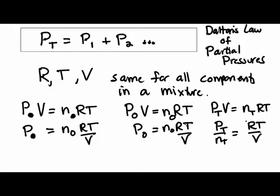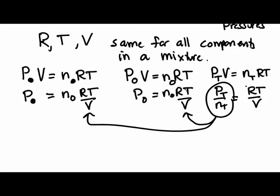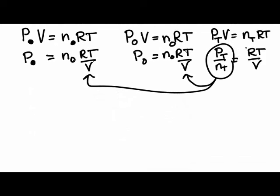What you notice is that if RT/V equals P_T/n_T, then that will be true for all components because they have the same values of R, T, and V. So we can substitute that expression in for RT/V for each component. I'm only going to do it for this one component. Instead of RT/V, we're going to put P_T/n_T.